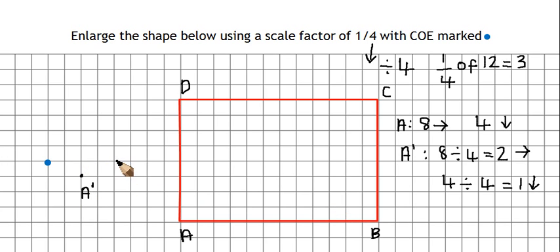Same for B. Now, B is 2, 4, 6, 8, 10, 12, 14, 16, 20. So it's 20 squares right and 4 squares down. Well, a quarter of 20 is 5. So it's going to be 5 squares right. Now, it was 4 squares down. A quarter of 4 is 1. So it's going to be 1 square down. So my new B is going to be there.